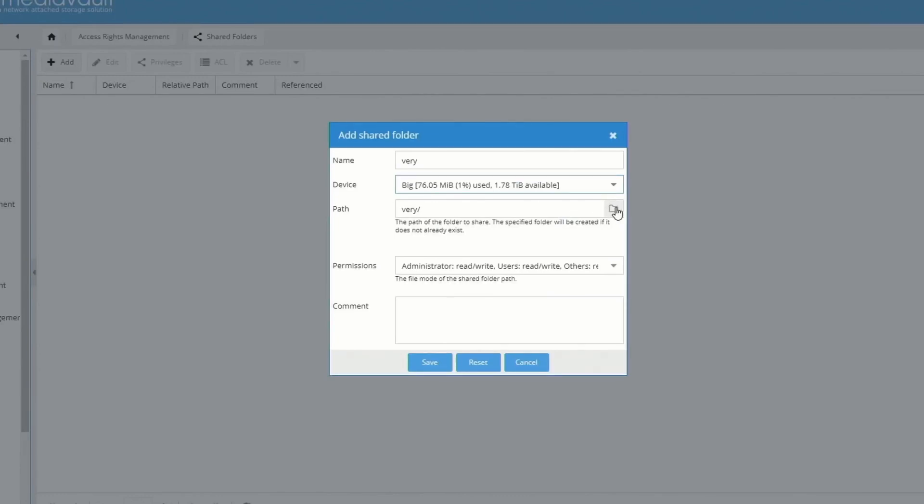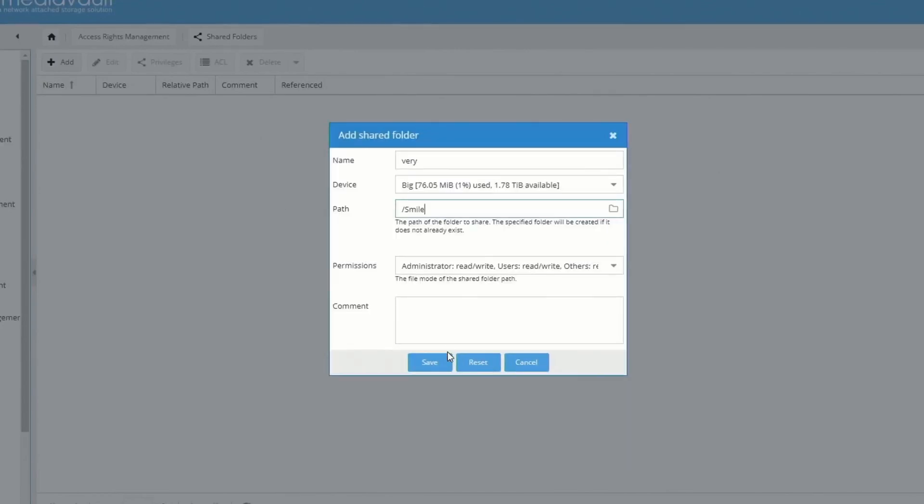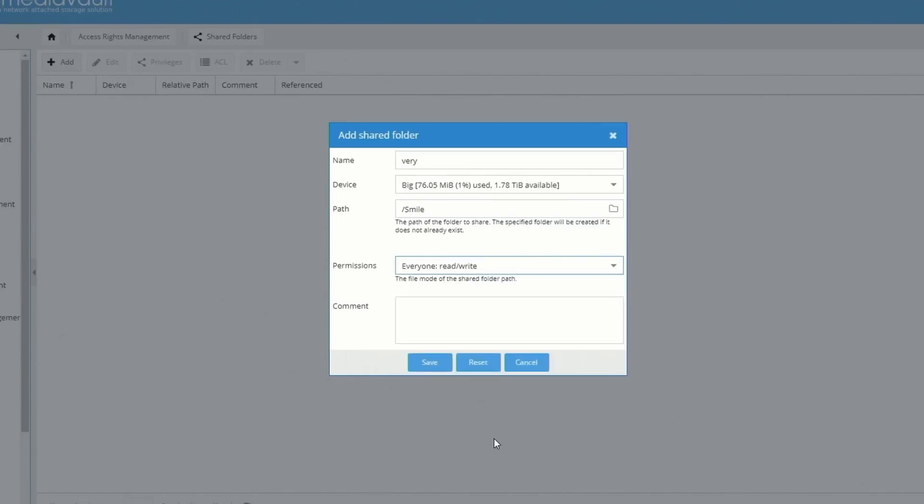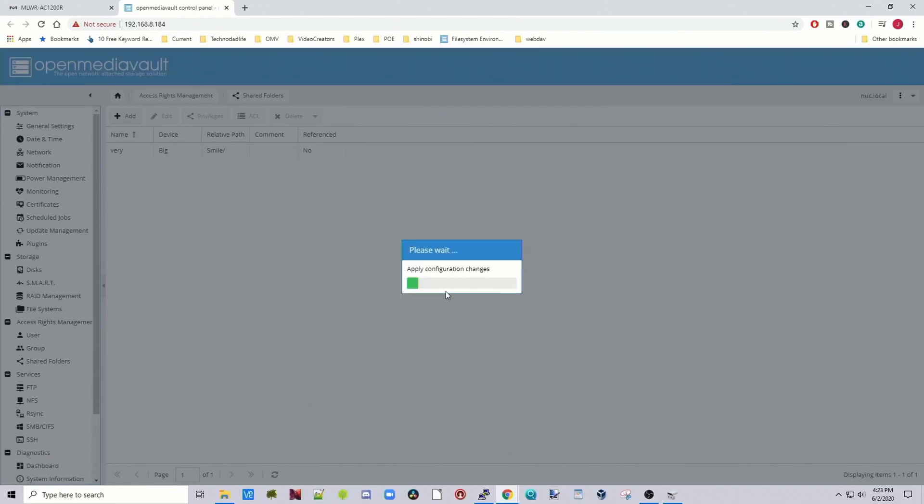For our path, we're going to pick the shared folder that was on that disk already. This one is Smile. Then we click OK. Then we put whatever read-write permissions we want. Then we click Save, then Apply and Yes.